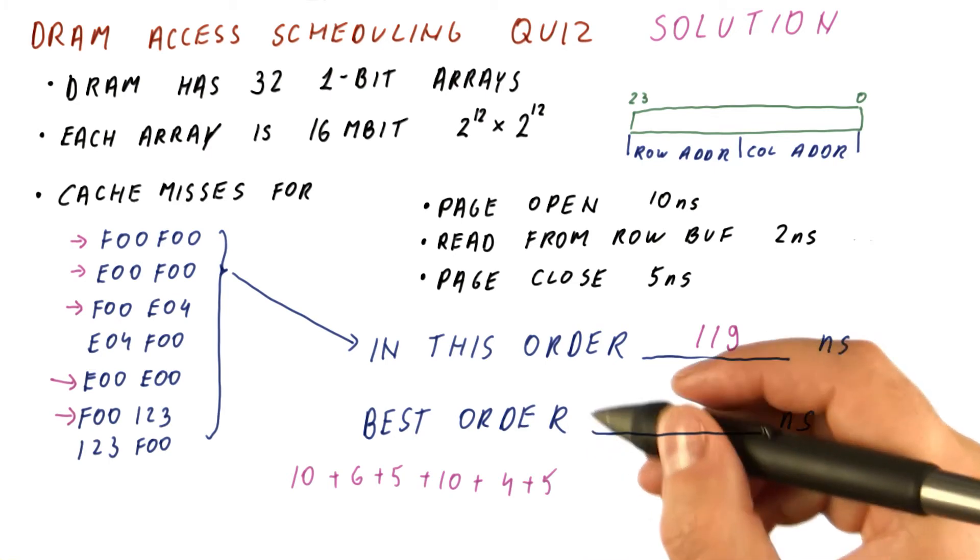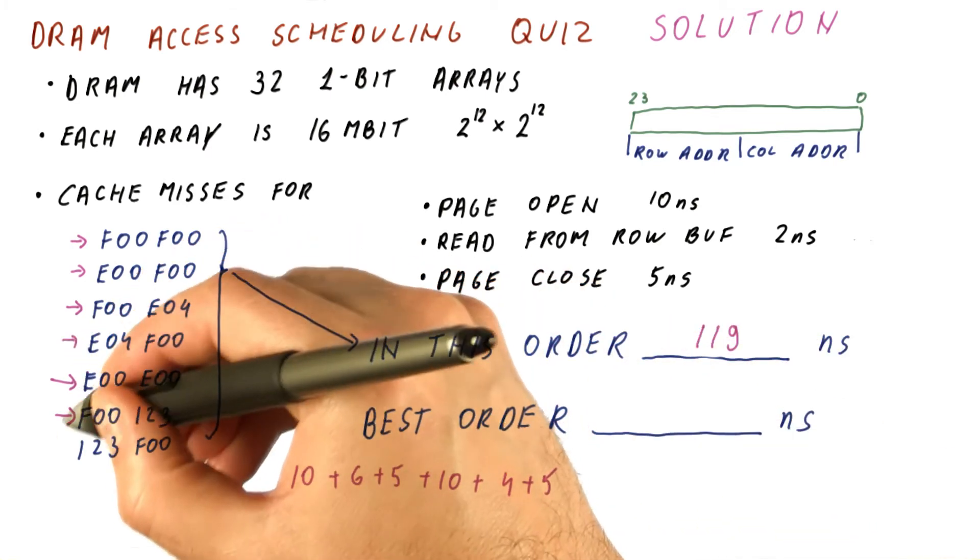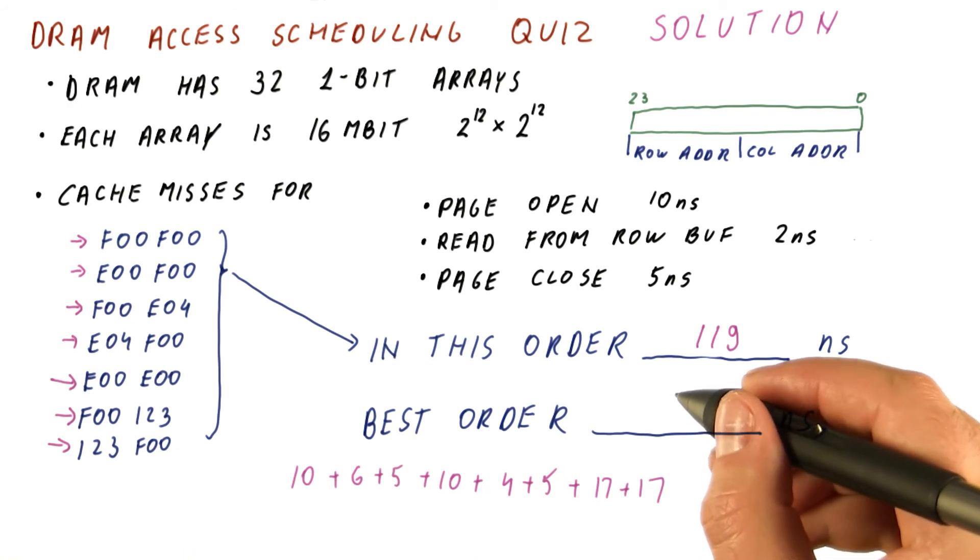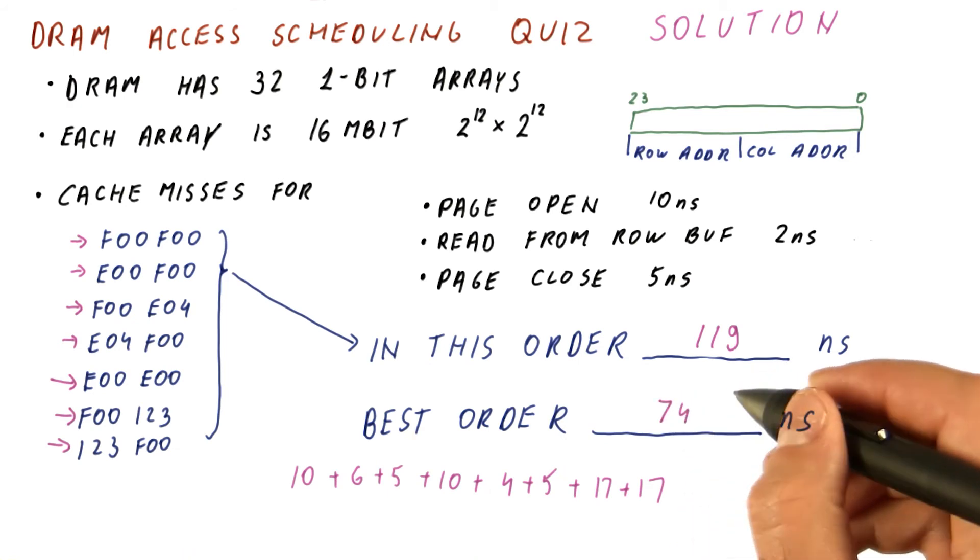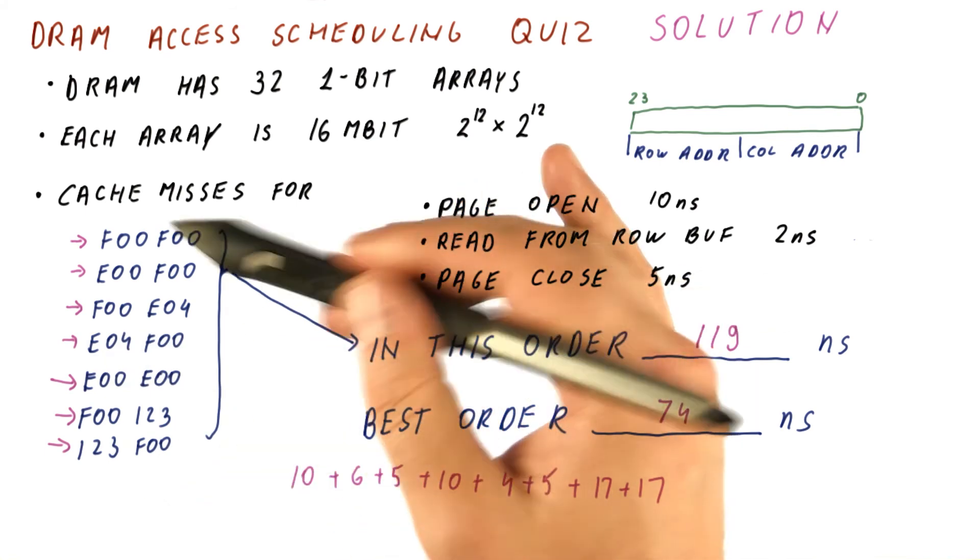And now we spend 17 nanoseconds for each one of these. In total, we spend 74 nanoseconds doing these accesses.